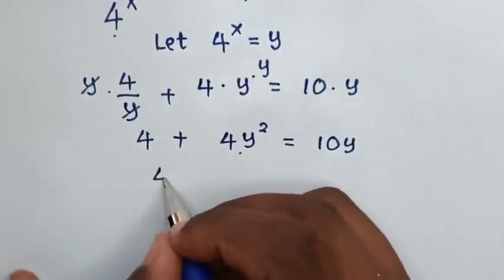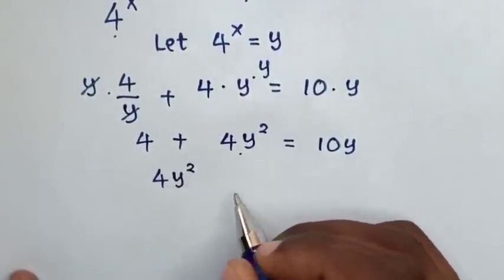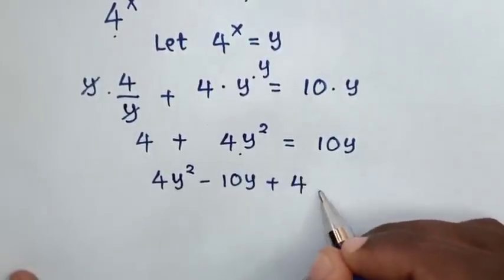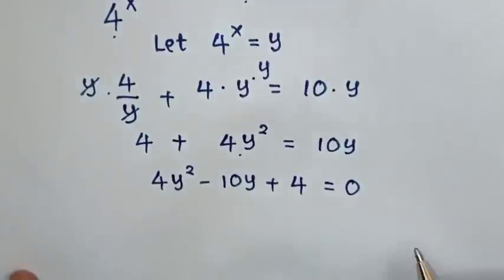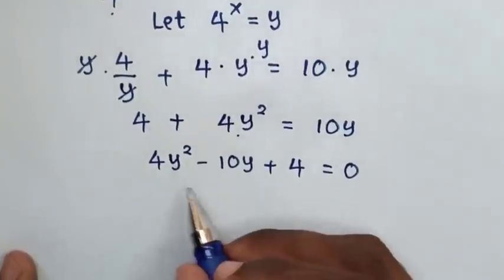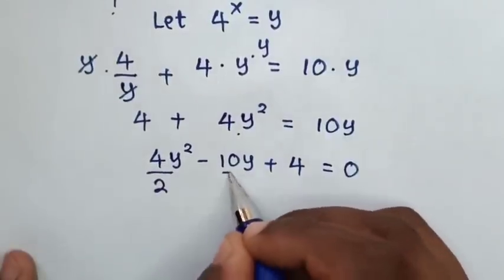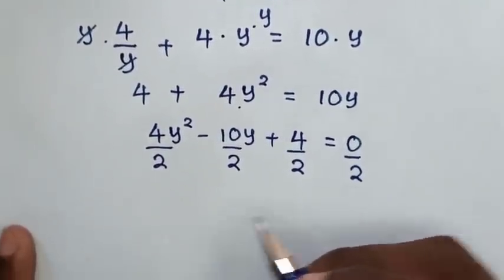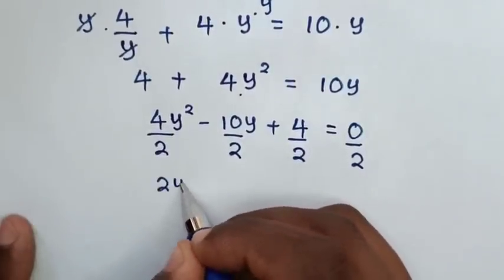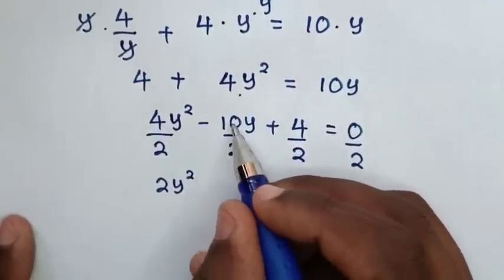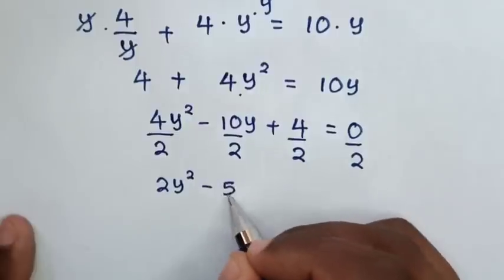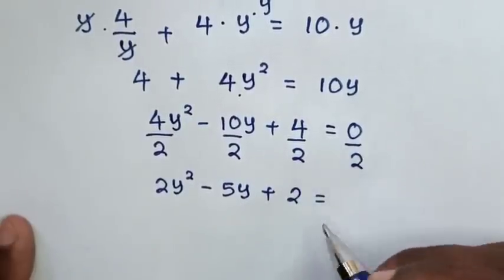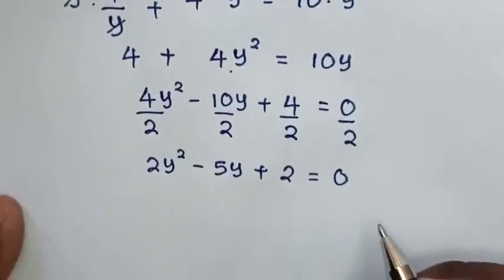It becomes 4y squared minus 10y plus 4 equals 0. From this equation, 2 is a common factor, so we divide both sides by 2. Our equation becomes 2y squared minus 5y plus 2 equals 0.